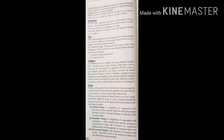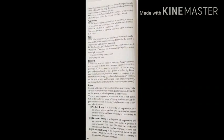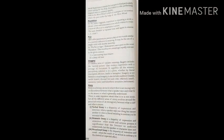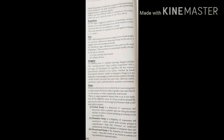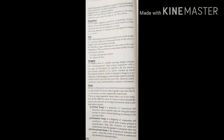Pun, also known as paranomasia, is a play on two words similar in sound but different in meaning. It may be the use of a single word with double meaning. In 'The Seven Ages,' Shakespeare uses a pun on the word 'pantaloon.' Imagery is a common term of variable meaning. It includes the mental pictures that readers experience with a passage of literature — all sensory perceptions referred to in a poem, whether by literal description, allusion, simile, or metaphor. Imagery is not limited to visual imagery but includes auditory, tactile, thermal, olfactory, and more.